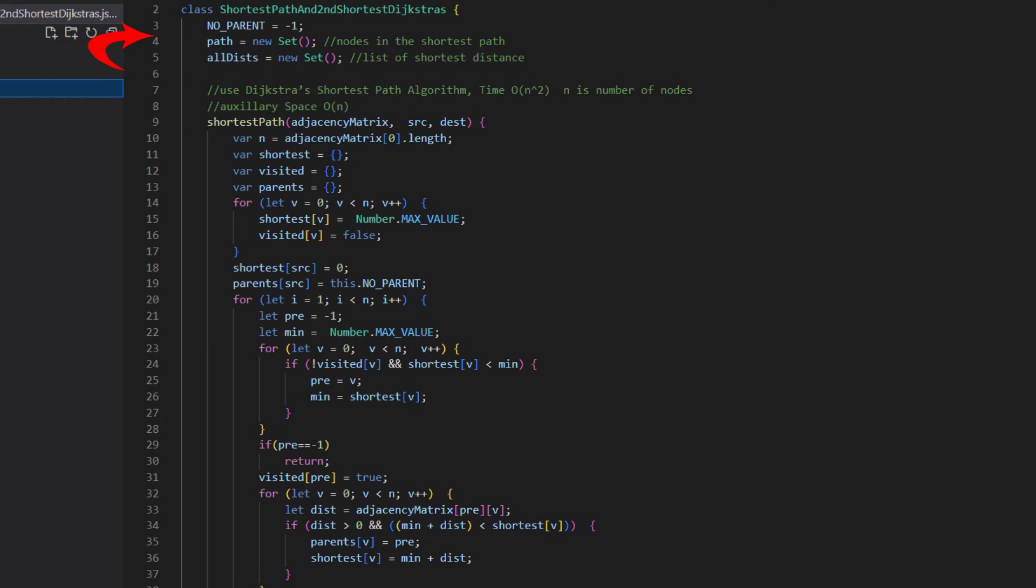Now let's look at the code. At the top we define class variables. Next is the function that implements Dijkstra. It is worth mentioning, shortest distance from source vertex to all vertices. The parents save the previous vertex that's in the shortest path.